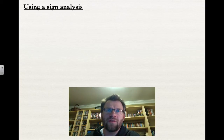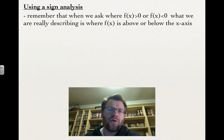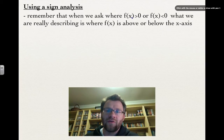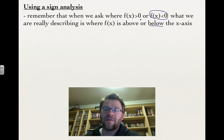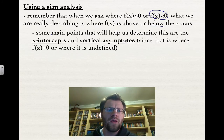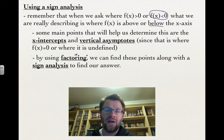Another way to solve inequalities — used when they get more complicated, like a quadratic or a polynomial of degree greater than 2 — is called a sign analysis. It also works for rational inequalities. When we're asked where f(x) is greater than 0 or less than 0, we're really asking where the function is above or below the x-axis. The key reference points are the x-intercepts (where f(x) = 0) and the vertical asymptotes (where it's undefined), which we find using factoring.